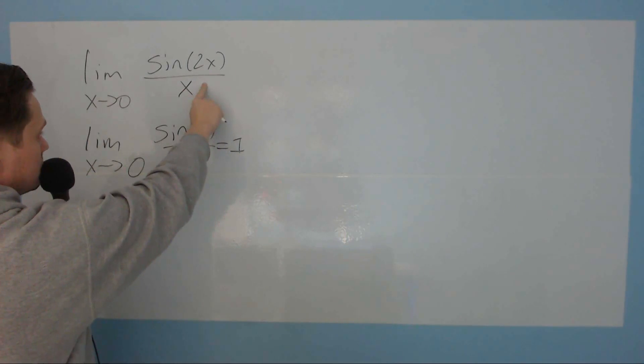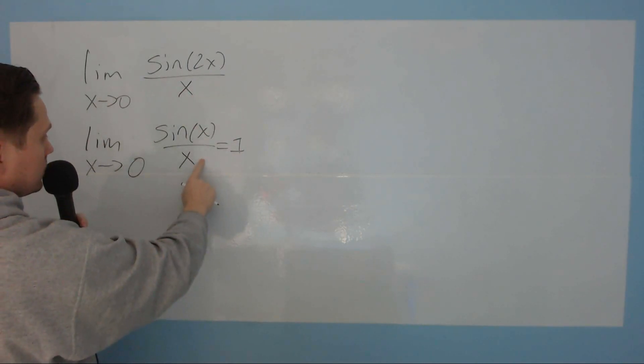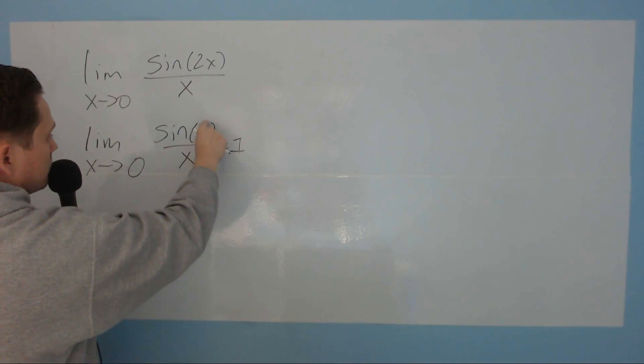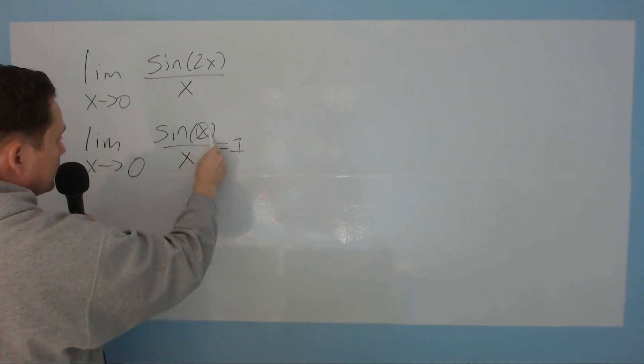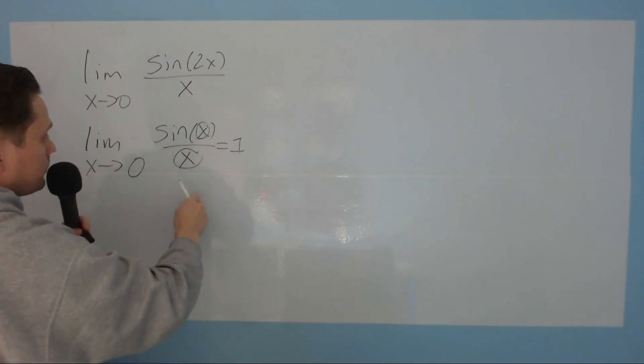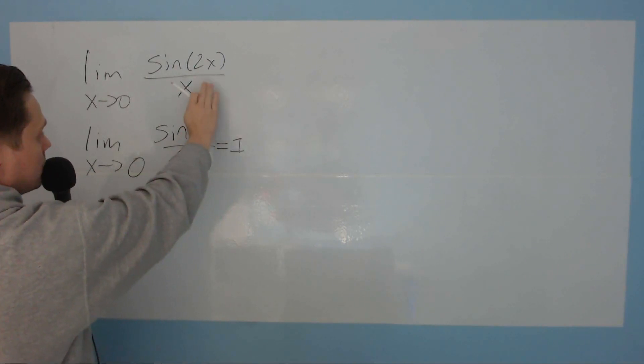So we have to make this expression conform to this. What that means specifically is you want whatever this part is right here to be the same as that part. Then that's equivalent to this. Right now in our original we have 2x. We don't have a 2 on the bottom.